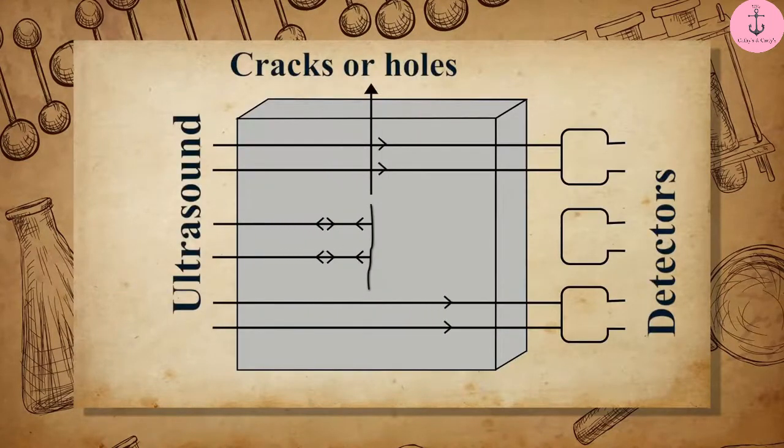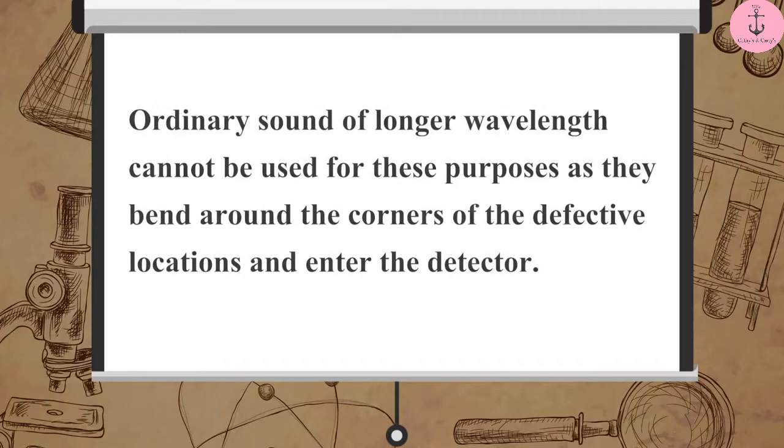Ultrasonic sounds are passed through the metals to check the presence of any holes or cracks, and detectors are used to detect any transmitted waves. Ultrasonic sounds of longer wavelength cannot be used for these purposes, as they bend around the corners of the defective locations and enter the detector.